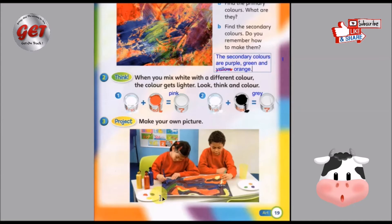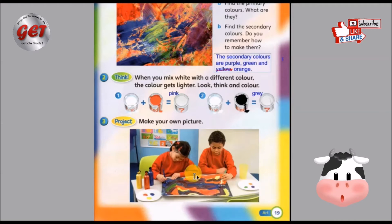原色或者是基础色呢是红色、蓝色跟黄色。And we can make secondary colors from the primary colors. The secondary colors are orange, green and purple. 我们现在有六种颜色，那小朋友们呢，你们可以找一张画纸，在画纸上画上漂亮的颜色。You may make your own pictures by using all these colors.